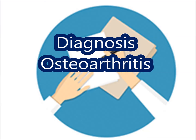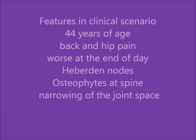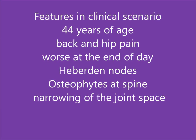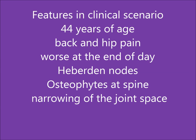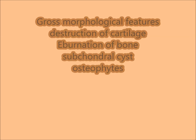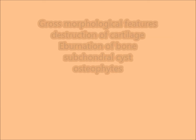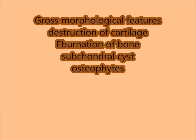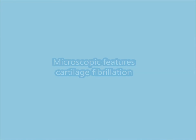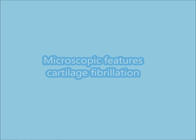The clinical features which support the diagnosis are: 44 years of age, back and hip pain worse at the end of day, Heberden nodes, osteophytes at the spine, and narrowing of the joint space. The gross morphological features are eburnation of bone, subchondral cyst, osteophytes, and destruction of cartilage. The microscopic features are cartilage fibrillation and cracks in the cartilage.